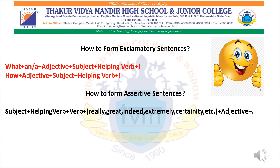Don't forget to add AN or A when you convert a sentence starting with 'what.' For 'how,' you don't have to use any article. To form an assertive sentence, the structure is: Subject + helping verb + verb + adverb (such as really, greatly, indeed, extremely, certainly, very, etc.) + adjective + full stop. An assertive sentence ends with a full stop. If they tell you to convert from exclamatory to assertive, you have to follow this format.